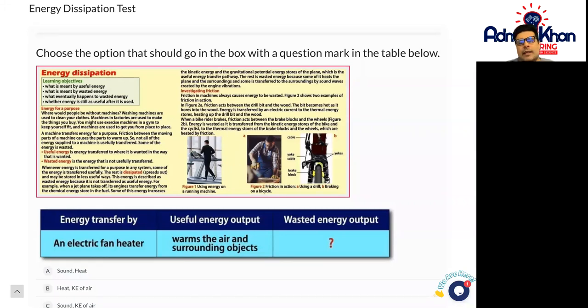Dissipation is a term used to describe ways in which energy is wasted. Any energy that is not transferred to useful energy stores is said to be wasted because it is lost to the surroundings.